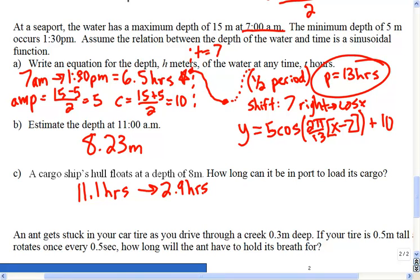So anywhere in between that, the ship can be in port, so that means the total amount of time it's got to be finished within 8.2 hours in order to get out of the port in time.